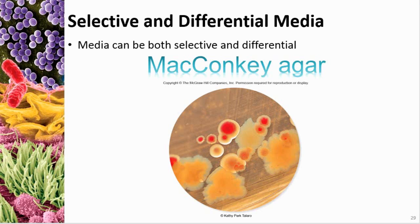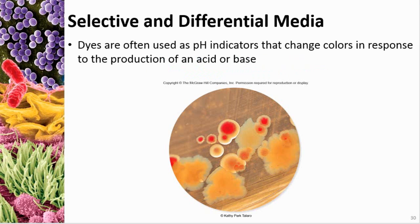You can have media that is both selective and differential. An example is MacConkey agar. It selects against gram-positive bacteria, allowing gram-negative bacteria to grow. It also differentiates between lactose-fermenting and lactose-negative bacteria. Lactose is in the medium, and those that ferment it create red colonies, while those that do not create yellow colonies. This is because dyes in the medium react to the pH change created by fermentation, coloring the colony.